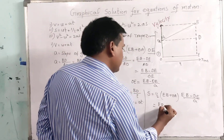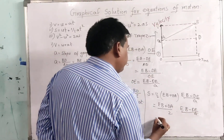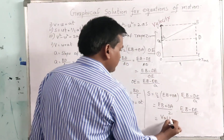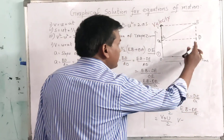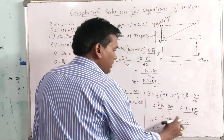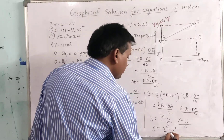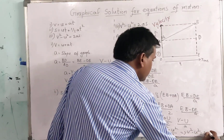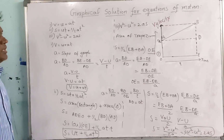This becomes S = (EB + OA) / 2 × (EB - DE) / A. Since EB is final velocity V, OA and DE are initial velocity U, this is in the form (A + B)(A - B) = A² - B². So S = (V² - U²) / 2A, which rearranges to V² - U² = 2AS. This is our third equation, completing the graphical derivation of all three equations of motion.